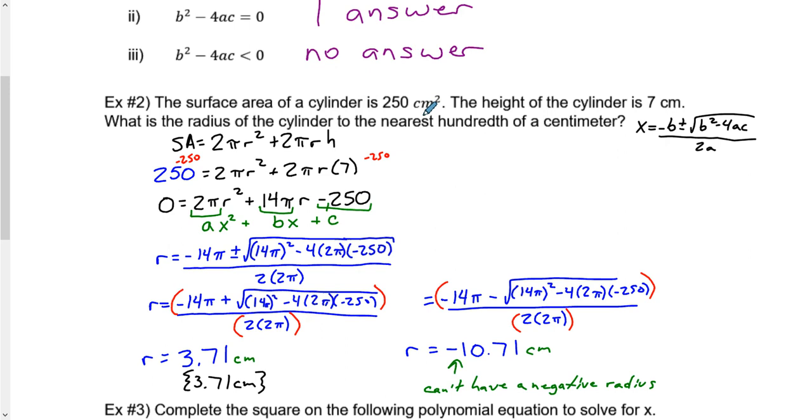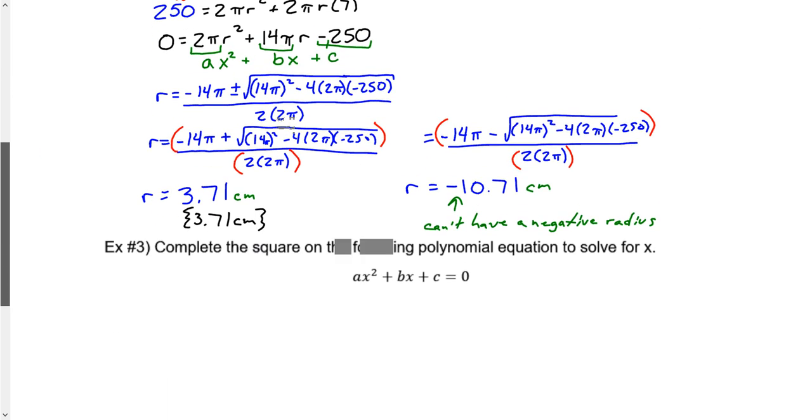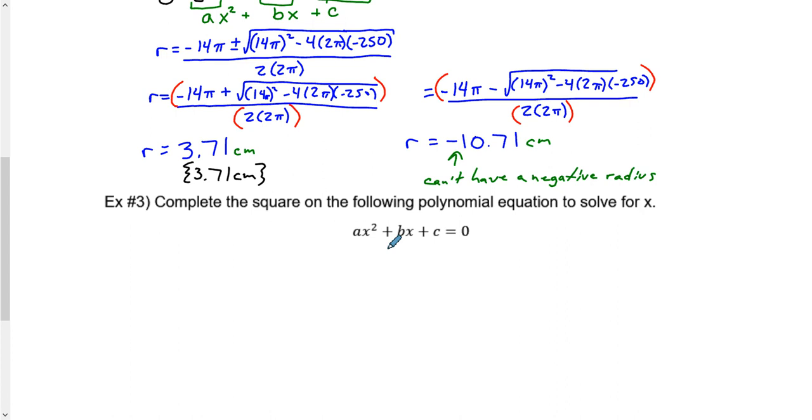If you were to type into your calculator 2 times π times 3.71 squared plus 2 times π times 3.71 times 7, you will get very close to 250. The purpose of this question is to get you to think critically of what is this question asking. You can keep on working on your assignment. If you would like to keep the video going and see some algebra for completing the square on a standard form, you're welcome to do that. If you want to stop the recording right now and just keep on working, that's fine.